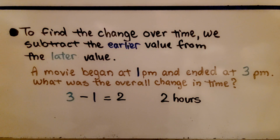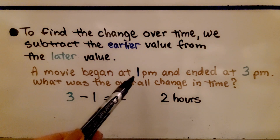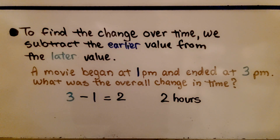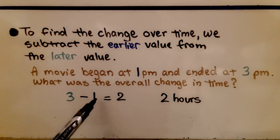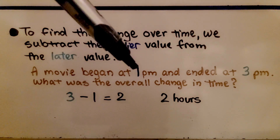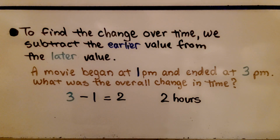If that's still confusing about earlier and later values: to find the change over time, we subtract the earlier value from the later value. Picture this: a movie began at 1 p.m. — that's the earlier value — and ended at 3 p.m. — that's the later value. To find how many hours went by, we start with the later value, 3 p.m., and subtract the earlier value, 1 p.m. The movie was two hours long; the overall change in time was two hours. We listed the later value as the minuend and took away the earlier value — that's what they did in this problem.